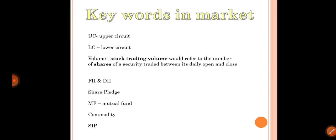Upper circuit and lower circuit: these are restrictions decided by NSE, BSE, and SEBI. They set upper and lower price limits for stocks — particularly for stocks operated by market operators — restricting how high or low the price can move in a day. These are called upper circuit and lower circuit.